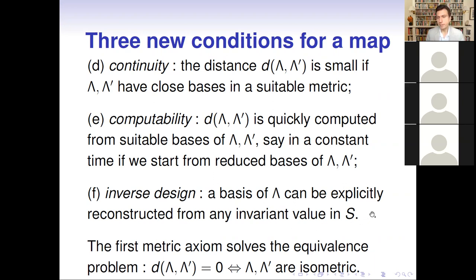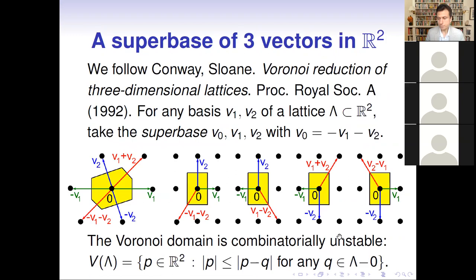I should highlight that the metric problem also solves the equivalence problem as a sub-problem. If you have a distance, checking whether it is zero tells you whether two lattices are isometric or not.